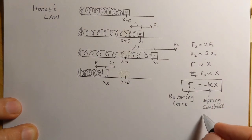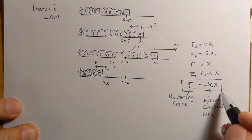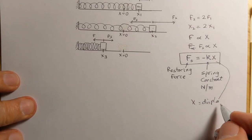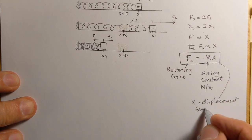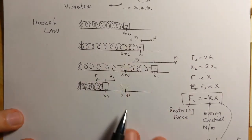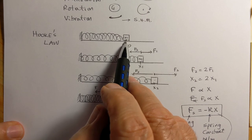The units would be newtons per meter because it's a force divided by displacement. The x would be the displacement from the equilibrium position or the mean position, and that means when the spring has no force on it.